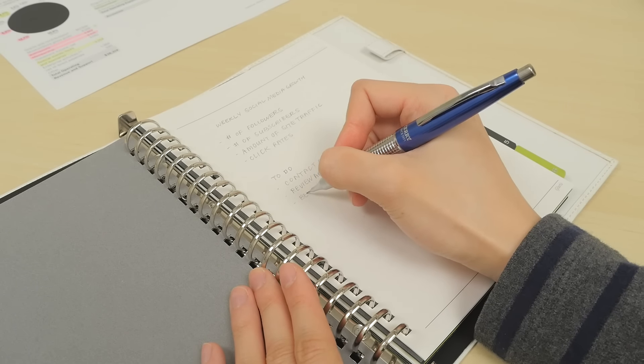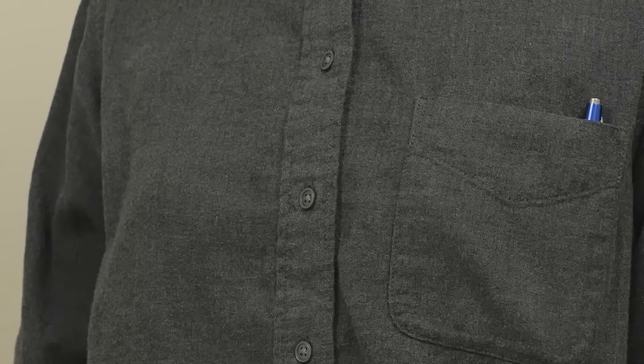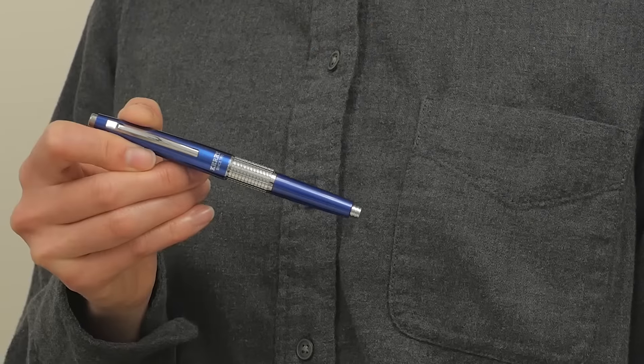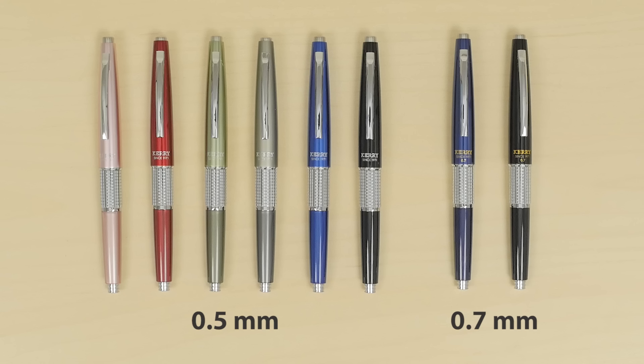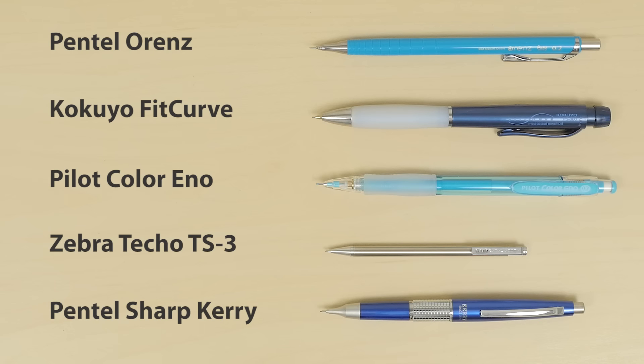When posted, it is a balanced 5.2 inches long, and when capped, the Kerry is a pocketable 4.9 inches long. It comes in 0.5 and 0.7 millimeters in a range of stunning colors.